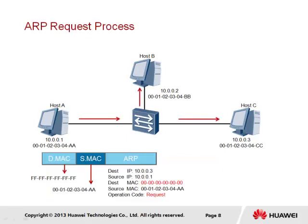The ARP request process involves the generation of an ARP packet populated with information known to the sender, which in this case is Host A. Host A will include its own MAC address and IP address within the source hardware and source protocol fields respectively, as well as the destination protocol address, which is the IP address of the destination — in this case Host C. Host A is currently unaware of the hardware address of the destination, and therefore the destination hardware address field is initially populated with a hexadecimal string equal to zero. The operation code is set to request, indicating that a reply is required from the receiver.